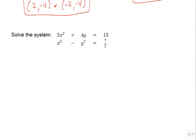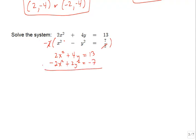We have 2x-squared terms nicely lined up. Note that the top equation has a y but the bottom has a y squared—these are not like terms, so the only matching terms are the x-squareds. We multiply the second equation through by negative 2 to get opposite coefficients on x-squared. The bottom equation becomes minus 2x squared plus 2y squared equals negative 7. When we add down, the x-squared terms cancel.